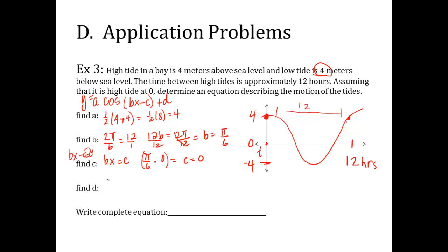d. Remember, that's one-half the max, which is 4, and this one is plus the minimum. Well, 4 minus 4 is 0. So it's one-half times 0. So that's 0. So we have our values. a is 4, b is pi over 6, c is 0, d is 0. So we write our equation. y equals 4 cosine pi over 6x. I don't have to use parentheses because c is 0 and then d is 0. So there's my final equation.